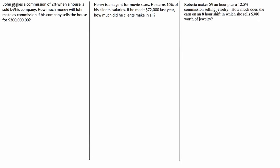John makes a commission of 2% when a house is sold by his company. How much money would John make as commission if the company sells the house for $300,000? Basically, the way you work this out is you take the value of the sale — which in this case is $300,000 — and multiply that by the percentage commission. I'm going to write it as a fraction.